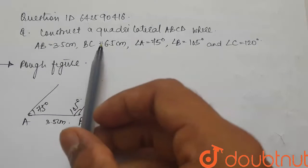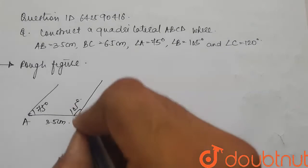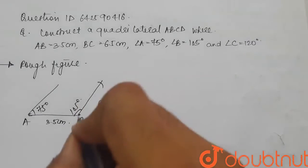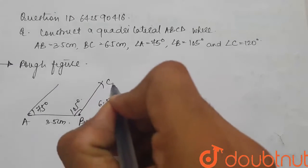You also know BC is 6.5 cm. So, we'll keep our compass on B and make a 6.5 cm arc on this line to get point C.